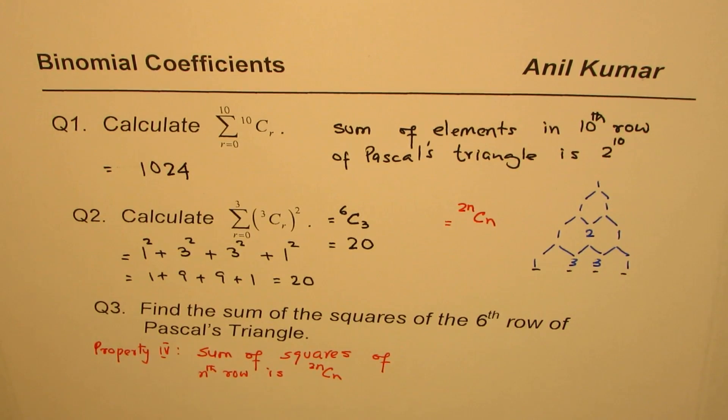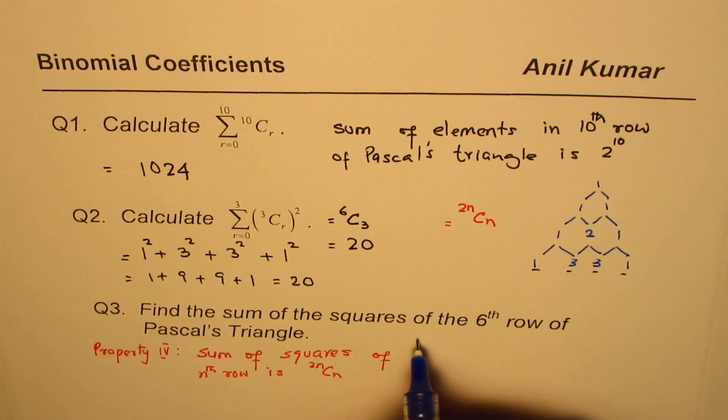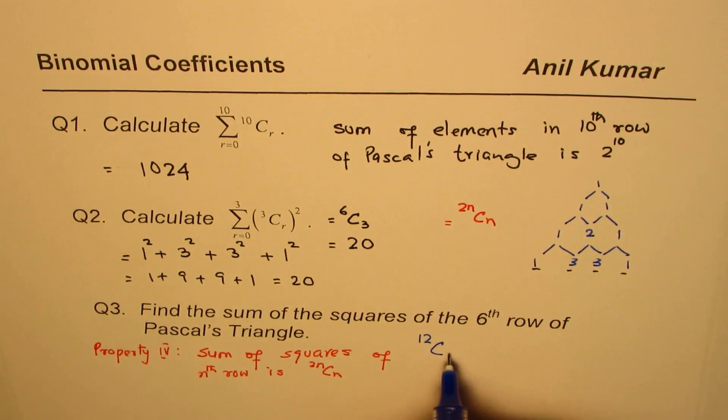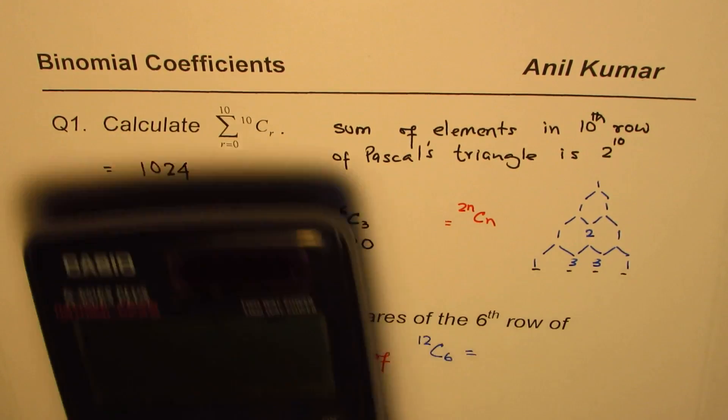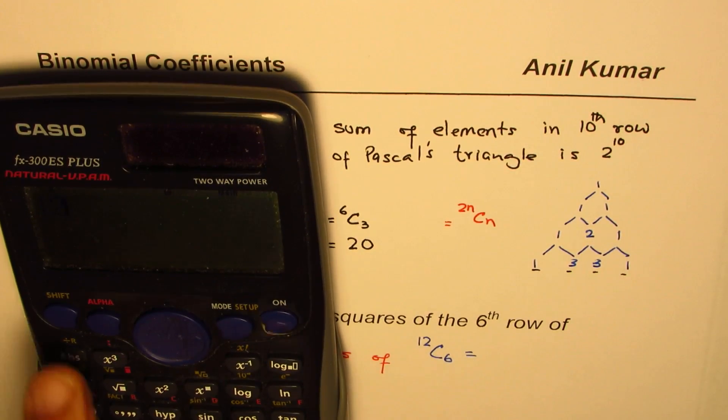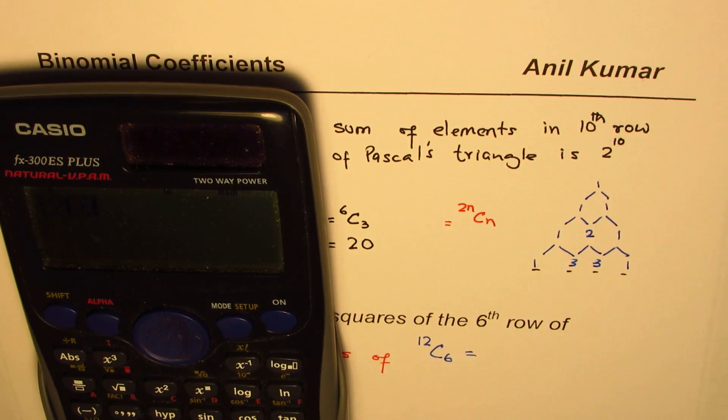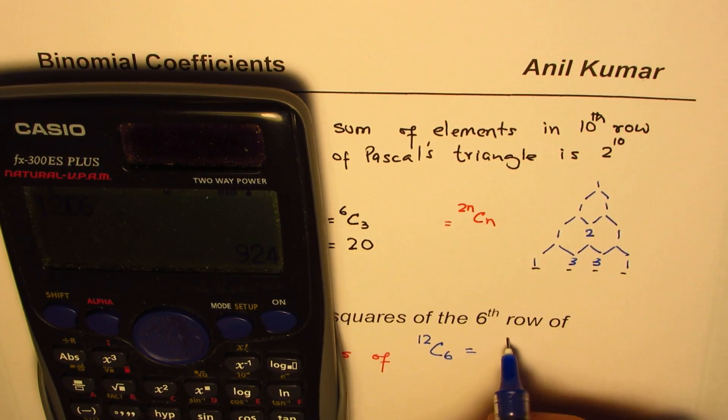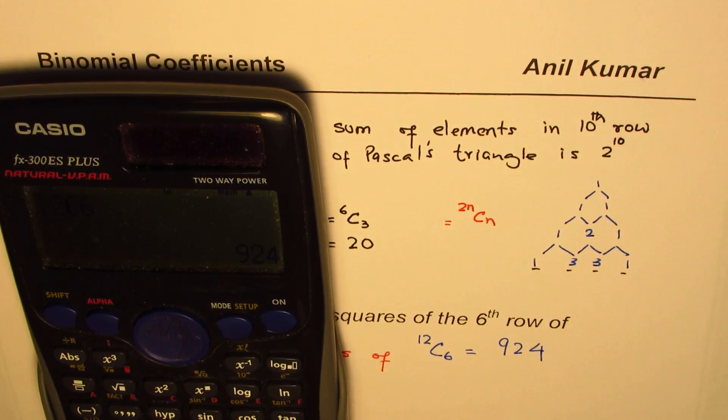We are now talking about 6th row. 2 times 6 is 12. So it is 12c6. So that is the sum. So we can straight away find the answer. So it is 12 combination 6. Choose 6. 924. So that is the result.